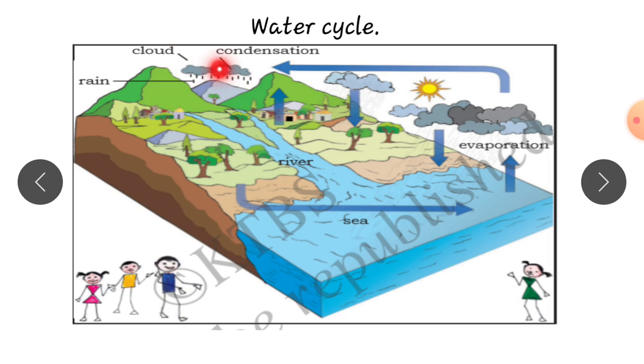Then it becomes too cool. Then it comes back to the earth in the form of rain. This process is called water cycle. This continuous process. Evaporation, clouds, condensation, then it comes to the earth in the form of rain and also in the form of snow. This is called water cycle. Understood children? We continue in the next class.